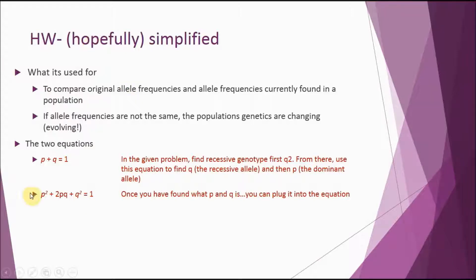In a typical example, you want to make sure to find the recessive genotype first. The problems will always tell you what trait is recessive — that's going to be your q squared. You want to work with q squared first because, just like in regular dominant-recessive phenotypes, a dominant phenotype could be homozygous dominant or heterozygous and show the exact same phenotype. There is only one phenotype and one genotype for the recessive, which is why we start there.